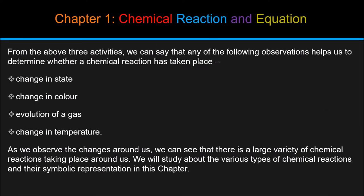From the above three activities, we can say that any of the following observations helps us to determine whether a chemical reaction has taken place: change in state, change in color, evolution of a gas, or change in temperature. As we observe the changes around us, we can see that there is a large variety of chemical reactions taking place around us.